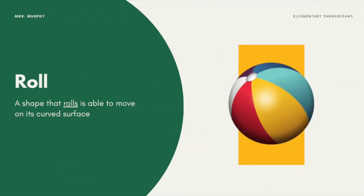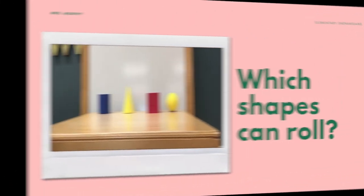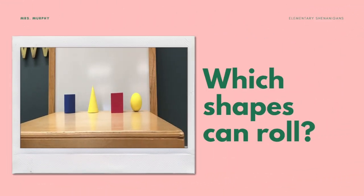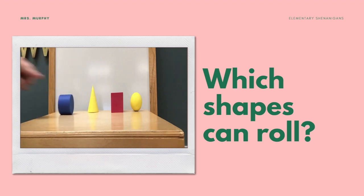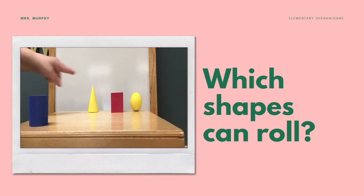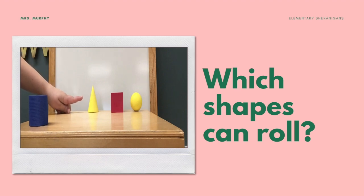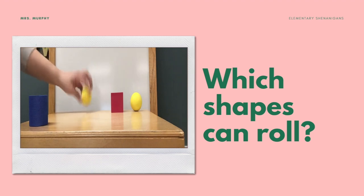While some shapes can slide, others can roll. A shape that rolls is able to move on its curved surface. Let's test to see which shapes can roll — remember, we're looking for a round side. The cylinder has a round side, so it can roll. Do you think the cone will be able to roll? You're right — it has a round side, so it can roll.